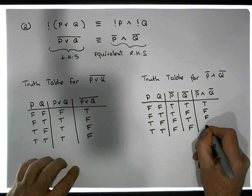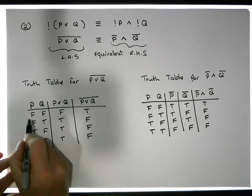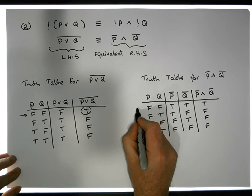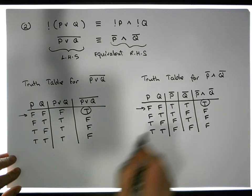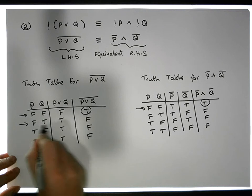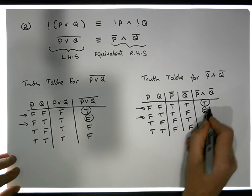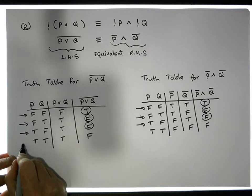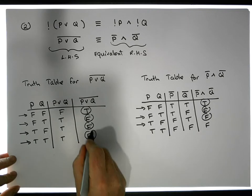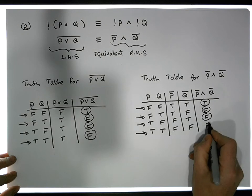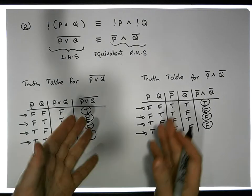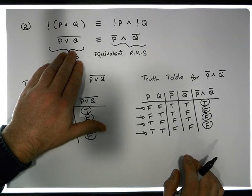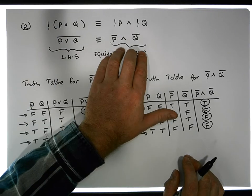Comparing the two sides: false-false gives true on the left and true on the right; false-true gives false on both; true-false gives false on both; and true-true gives false on both. So we've shown through truth tables that p-or-q bar is logically equivalent to p-bar and-ed with q-bar.